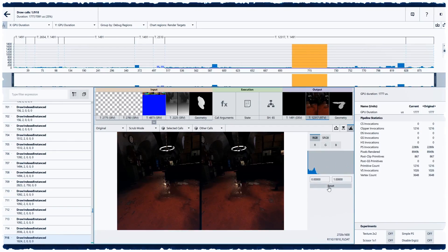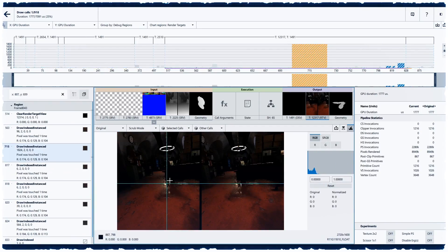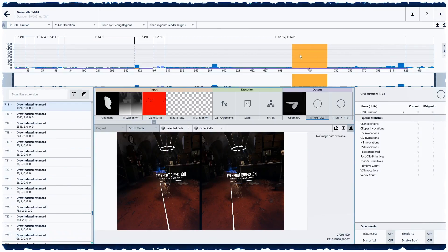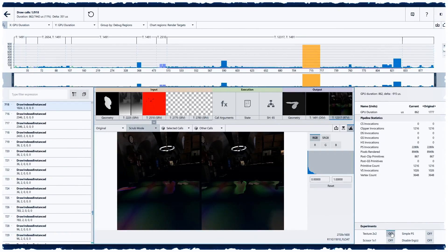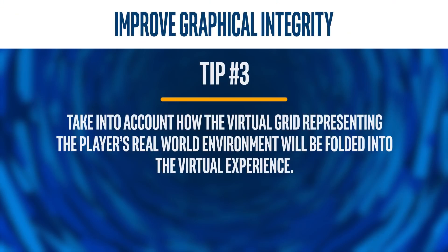To achieve this, you can use tools like Intel's Graphics Performance Analyzers to find performance bottlenecks that can impact your frame rate. Take into account how the virtual grid representing the player's real-world environment will be folded into the virtual experience. For example, when the image below the floor grid boundary is full of detail,